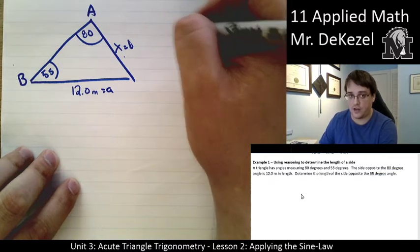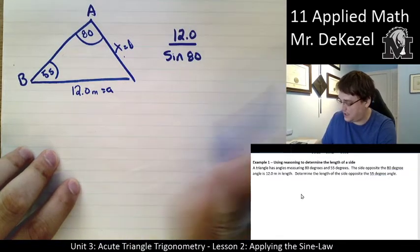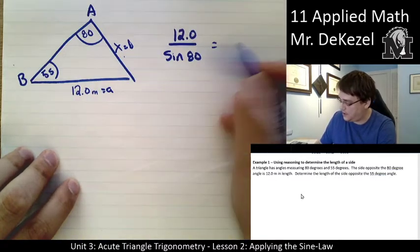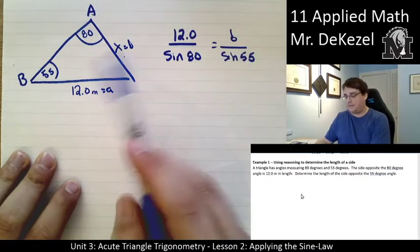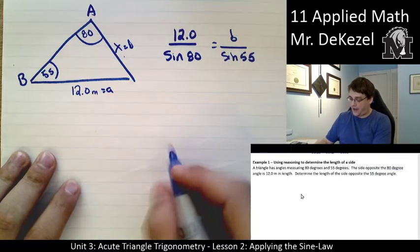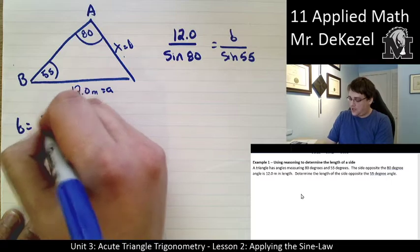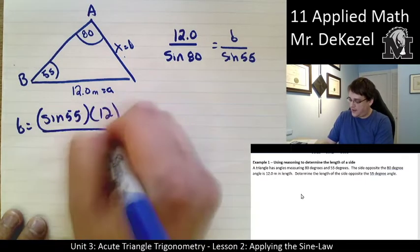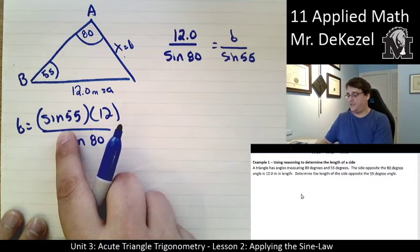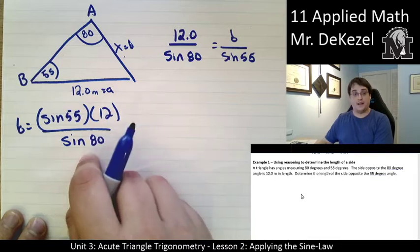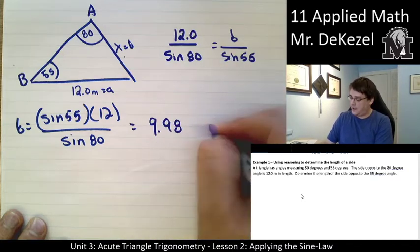It's always side over angle. So, side 12 over sine of 80, and then side B, the unknown, over the sine of 55, the angle. Now I have an equation in which I only have one unknown, so I can solve for that. Let's rearrange. B is equal to sine of 55 times 12 divided by the sine of 80. If we do that, we get 9.98 meters.